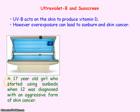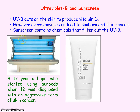There was a story of a 17-year-old girl who started using sunbeds regularly from the age of 12 and was diagnosed with a very aggressive form of skin cancer. To avoid sunburn and skin cancer you should use sunscreen, which contains chemicals that filter out or absorb the UVB. This sunscreen has a sun protection factor of 50 plus and it protects against both UVA and UVB.